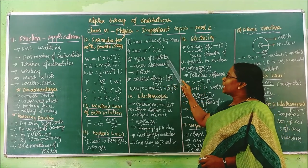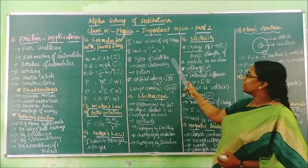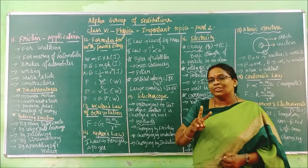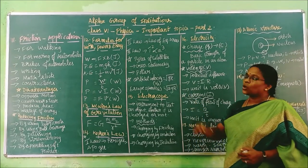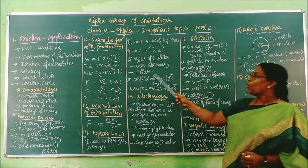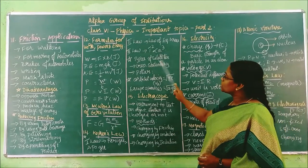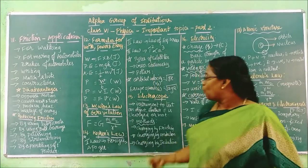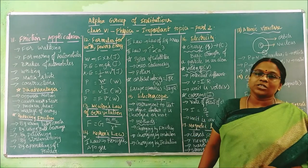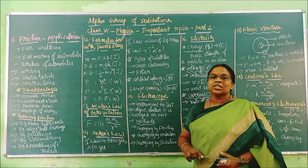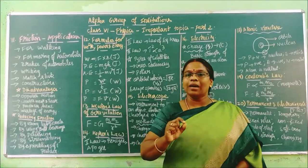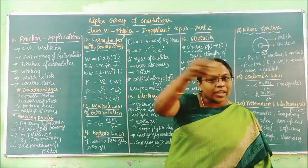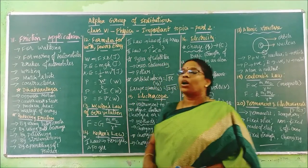Now we are moving to types of satellites. There are two types: geostationary satellite and polar satellite. We also have two types of velocities: orbital velocity and escape velocity. Orbital velocity is the velocity a body must have to move in an orbit. For example, the Earth rotating in its orbit around the Sun has some speed — that is called orbital velocity, denoted by V₀.